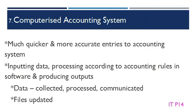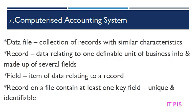A computerized accounting system is a much quicker and more accurate way to make entries to an accounting system. Accounting using a computerized system involves inputting data, processing it according to accounting rules in software, and producing outputs. Data is collected and processed into information. Files are updated to include the processed data, then finally the data is communicated to the users in the form of outputs. In terms of accounting systems and databases, a data file is a collection of records with similar characteristics. A record in a file consists of data relating to one definable unit of business information and is made up of several fields. It should contain at least one key field which makes it unique and identifiable. A field is an item of data relating to a record.